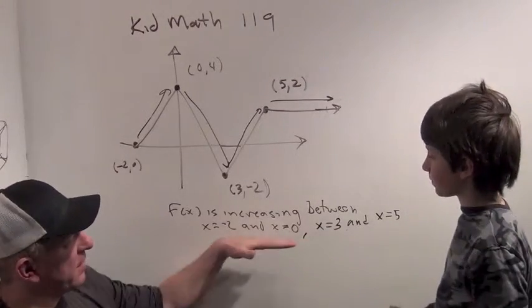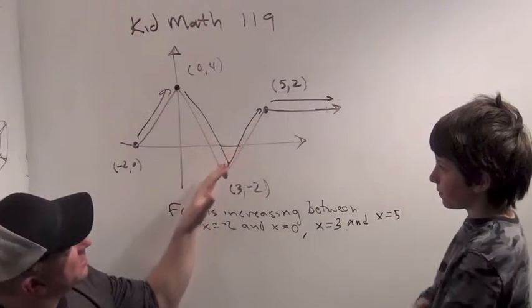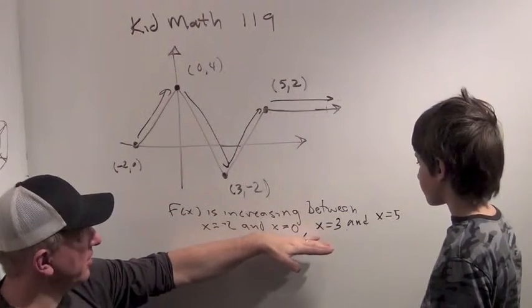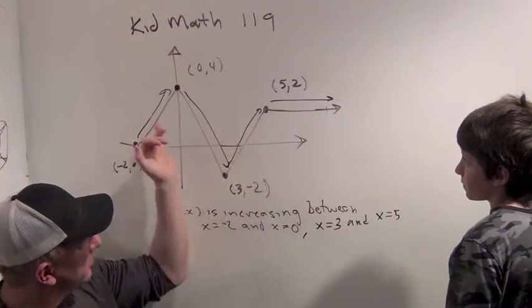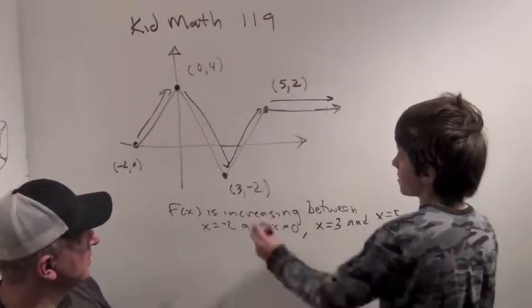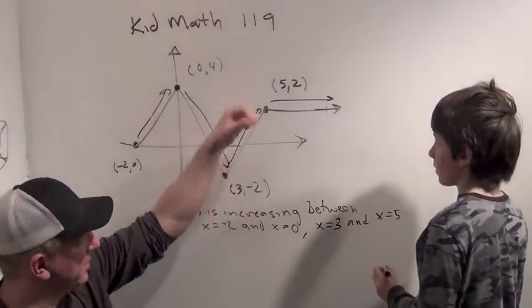Now, let's find the slope of one of these lines. Which one do you want to find the slope of? You can pick whatever one you want. Let's do this one right here. That one? Okay. So what's the slope in between x equals 3 and x equals 5?